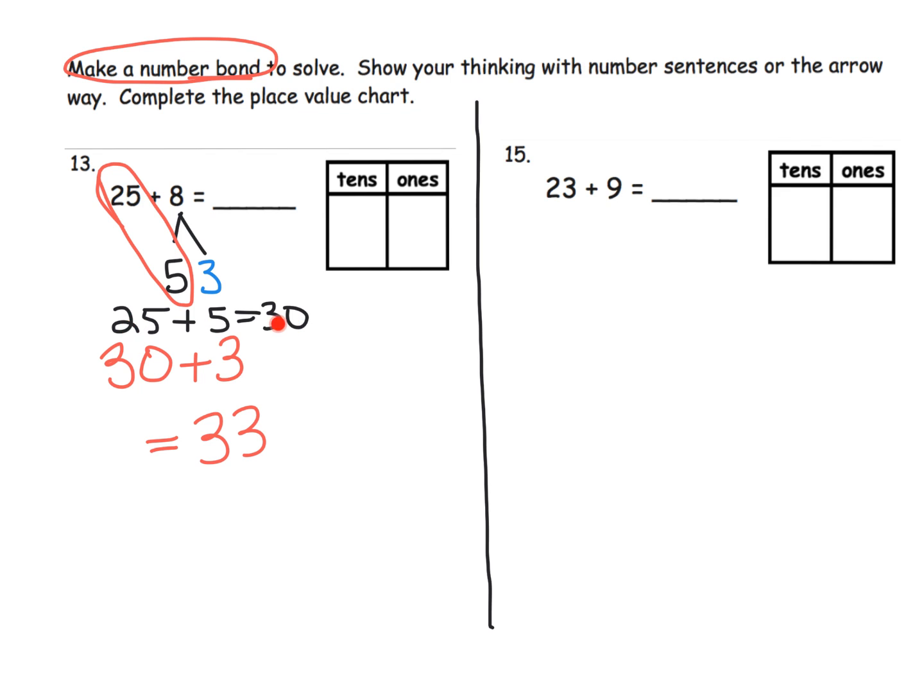Let's take a look over here. So again we have 23, and we need to think about how much more do I need to get to 10, to the next value, to the next benchmark? And I know I need seven more, so I'm going to take my nine and I'm going to decompose it to seven and two.